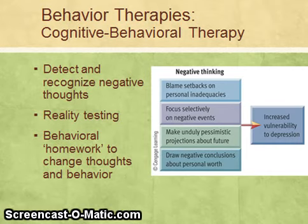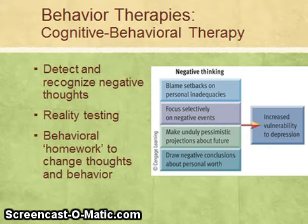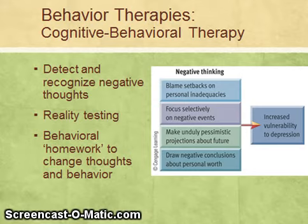In cognitive therapy, the client is taught to challenge those thoughts. For example, the thought 'I can't do anything right' — every one of us can come up with at least one instance when we did something right. When we think about that and reality test the thought, we discover the thought is false. This allows us to change the thought to something more realistic, such as: 'I made a mistake, but it's just one mistake.'